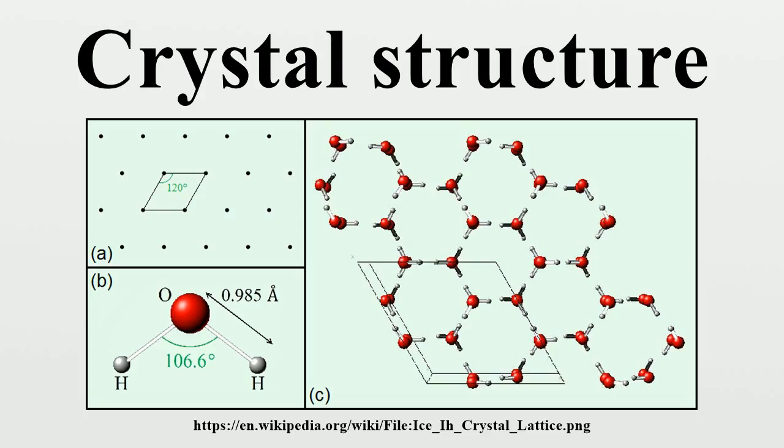Unit cell: The crystal structure of a material can be described in terms of its unit cell. The unit cell is a small box containing one or more atoms arranged in three dimensions. The unit cells stacked in three-dimensional space describe the bulk arrangement of atoms of the crystal.